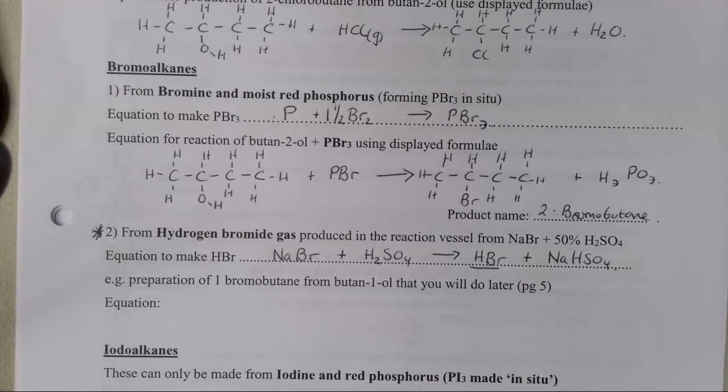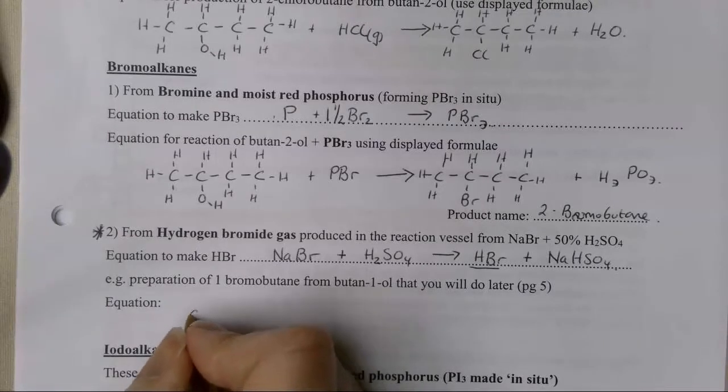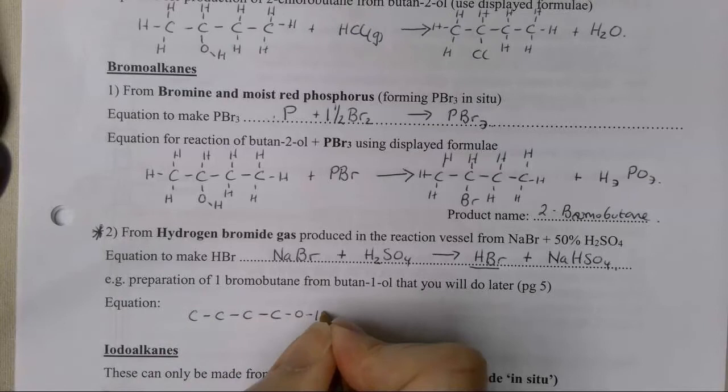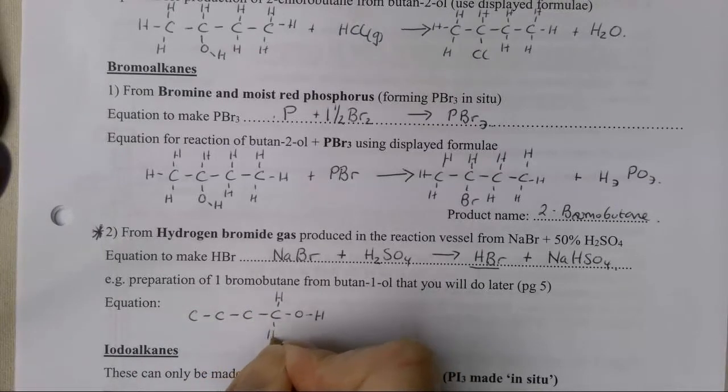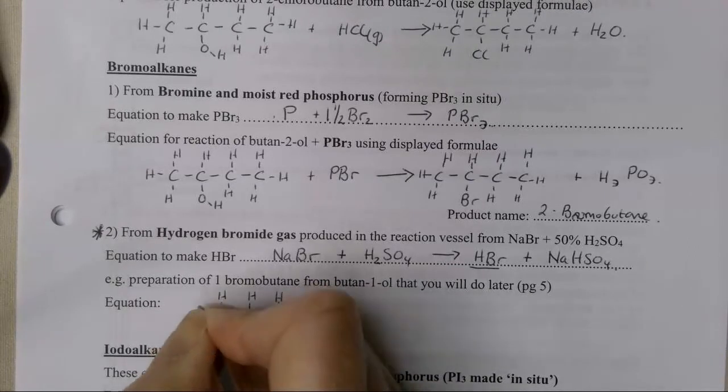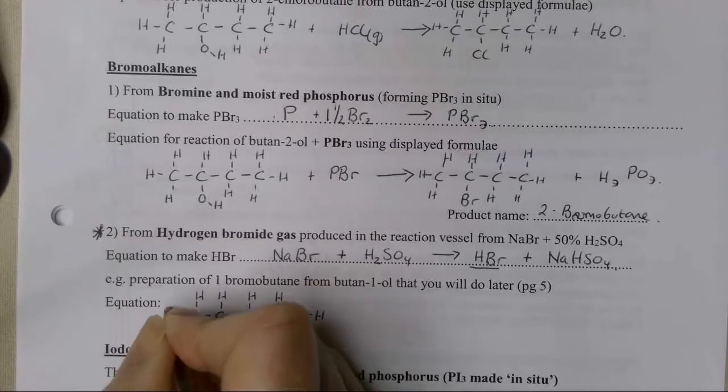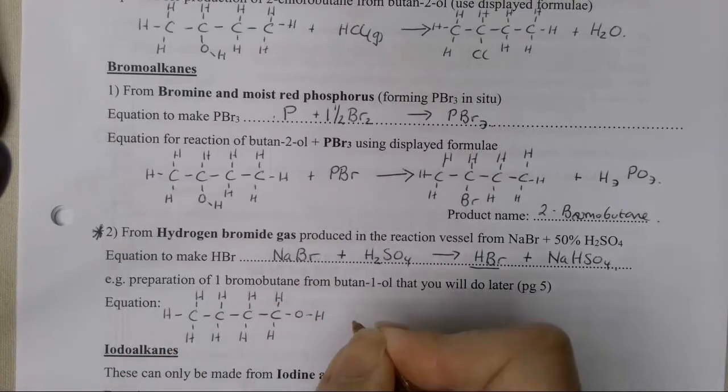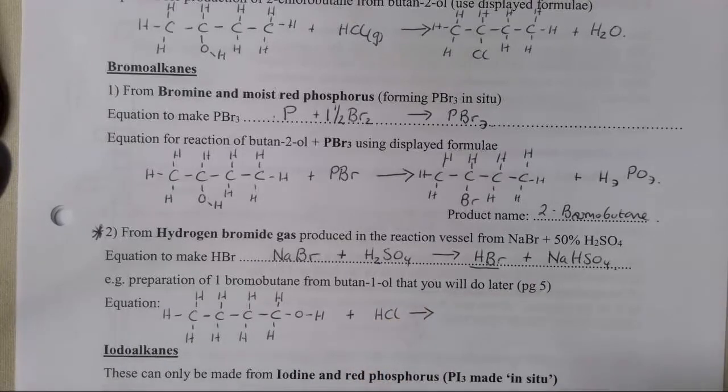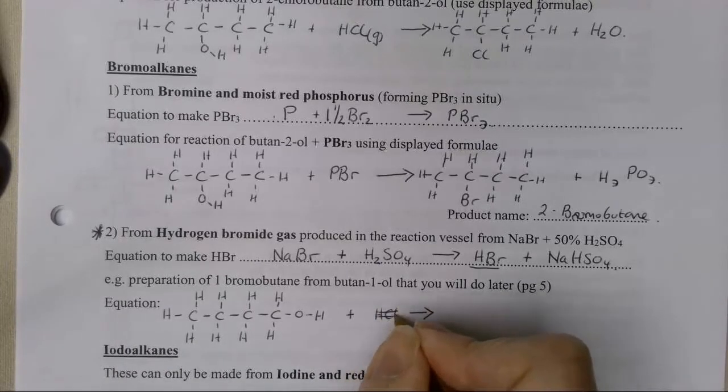Let's have a look at what that means for making 1-bromobutane from butan-1-ol. This is one of the large experiments that we would normally do in the lower sixth. It's probably one of the largest experiments. Obviously, we can't do it at the moment, but you would do it as soon as we are back in college because this is one of your core practicals.